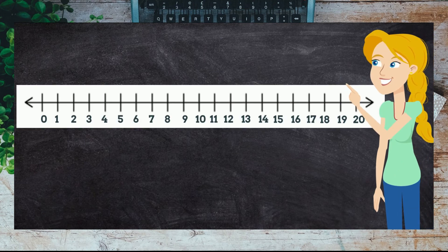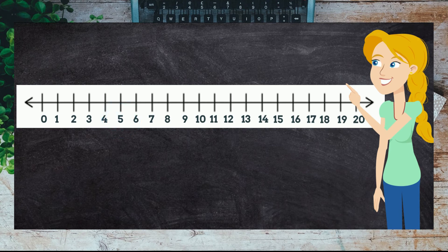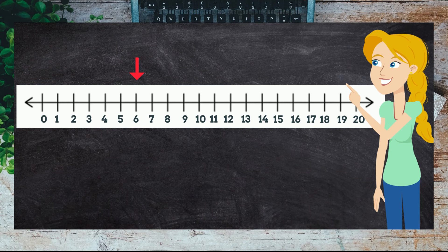Can you see the number five on this number line? Great. Do you know what number comes after the number five? That's right. It's number six.